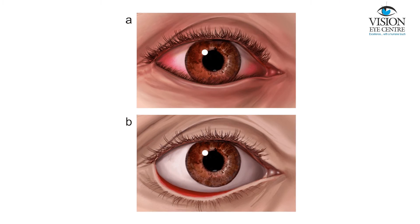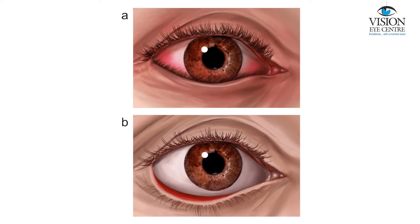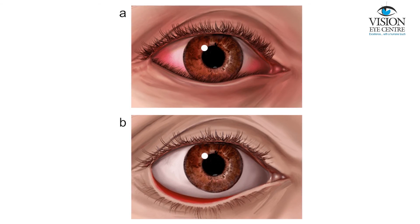The surgery involves treating this sagging and tightening this part of the eyelid and turning it to the right position. Even in this condition there may be issues other than aging which cause this problem.